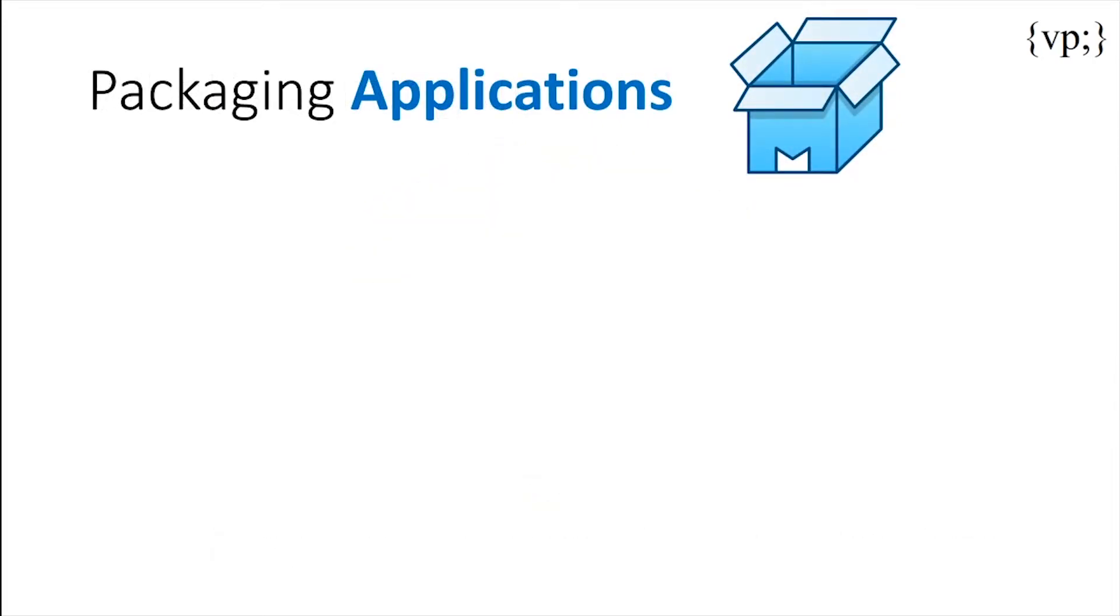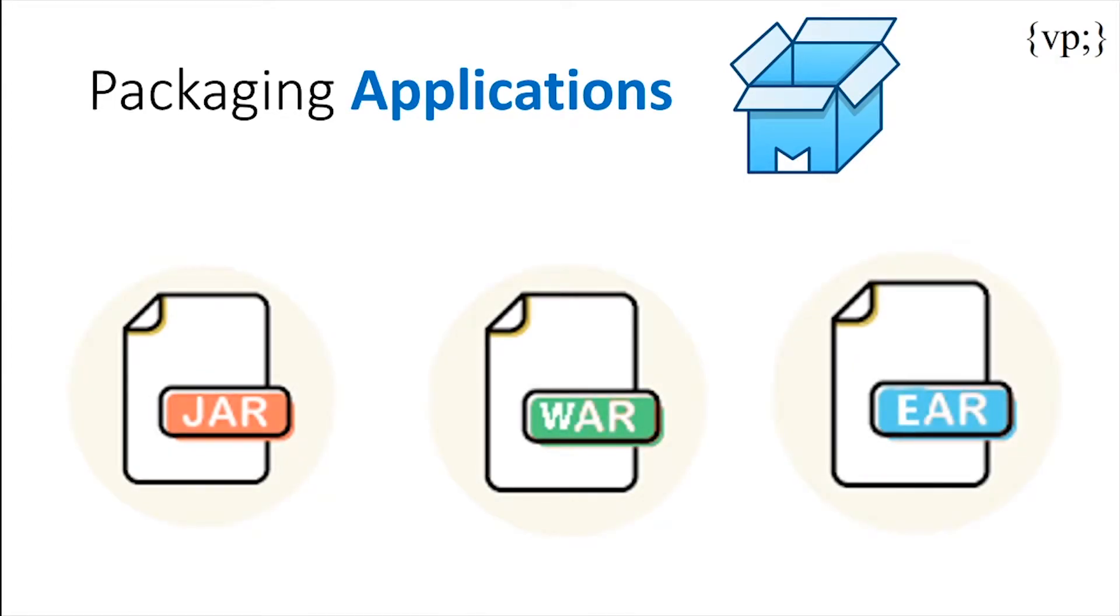Whatever you write in Java EE, it will be packaged into one of three files: a Java archive file, a web archive file, or an enterprise archive file. In short, these are the JAR, WAR, and EAR files. These files allow the application to assemble the required files needed for any task at hand.